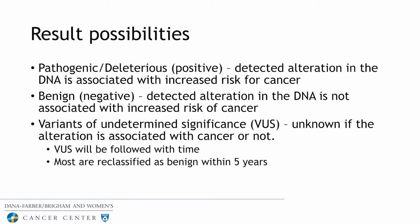If you have germline genetic testing, there are a few possible result types. A positive result means there's a pathogenic or deleterious mutation in a cancer gene associated with increased cancer risk. A negative result means the detected alteration is benign and not associated with increased risk. There's also a variant of undetermined significance, or VUS, where there's an alteration in the DNA but we don't yet know if it's associated with cancer. VUSs are followed over time — testing companies provide updates, and most are reclassified as benign within five years. We check VUS status with patients at follow-up visits using available databases.